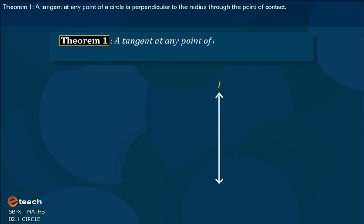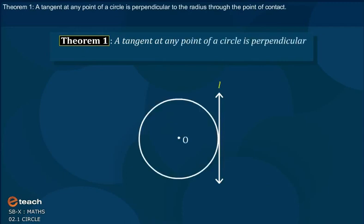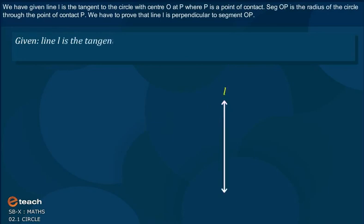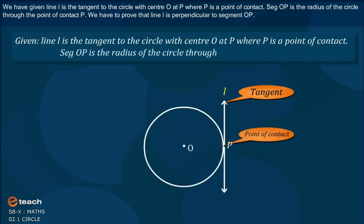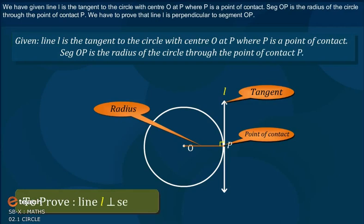Theorem 1: A tangent at any point of a circle is perpendicular to the radius through the point of contact. We have given that a line L is the tangent to the circle with center O at point P, where P is the point of contact. Segment OP is the radius of the circle through the point of contact P. We have to prove that line L is perpendicular to segment OP.